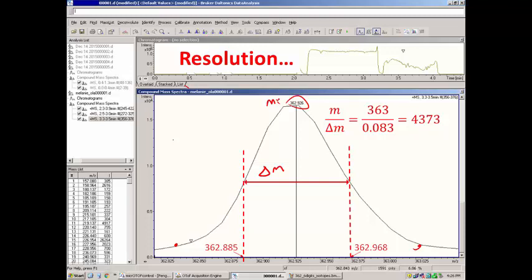So if we were to calculate the resolution as M over delta M, you'll see it's a little bit higher than 4000. I mentioned in a previous video that this instrument should have a resolution of a lot better than that, maybe up to 15,000 at max, 10,000, something like that. So this instrument today wasn't operating optimally, but it should be able to do a very good number. So 4000 is still a very respectable number.